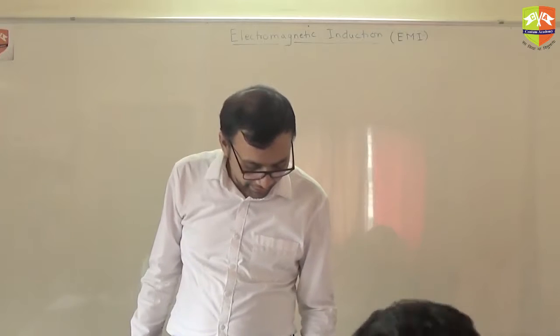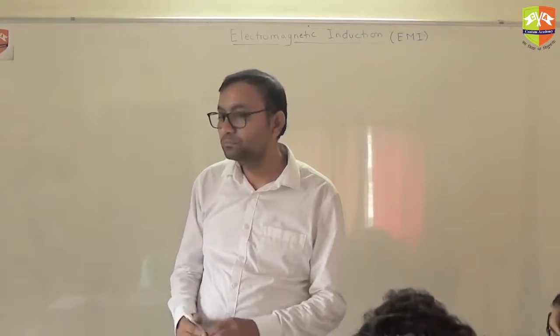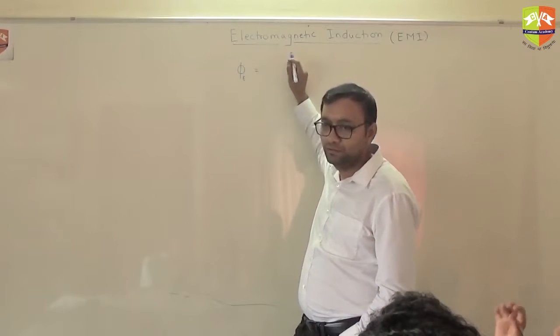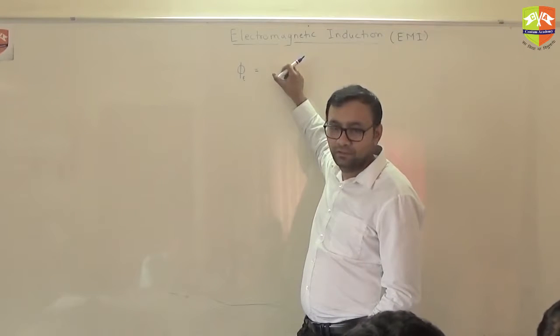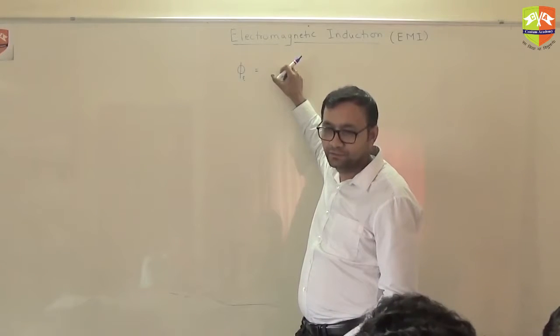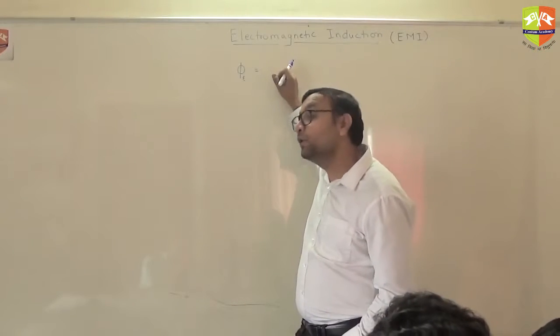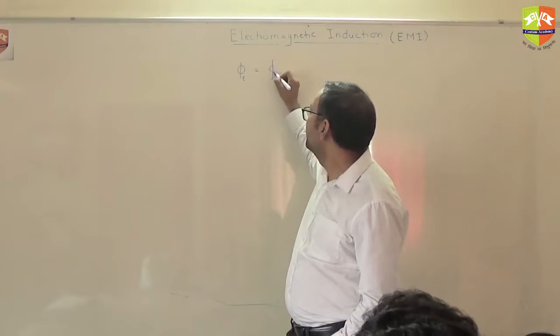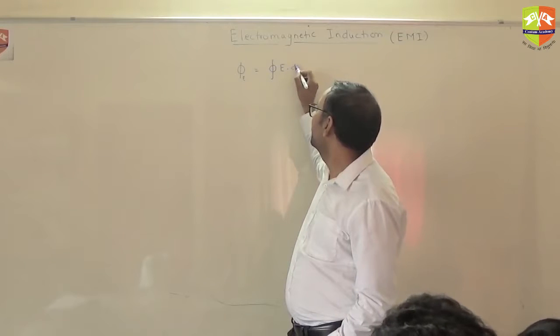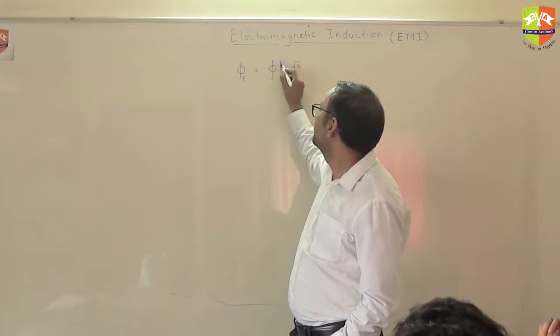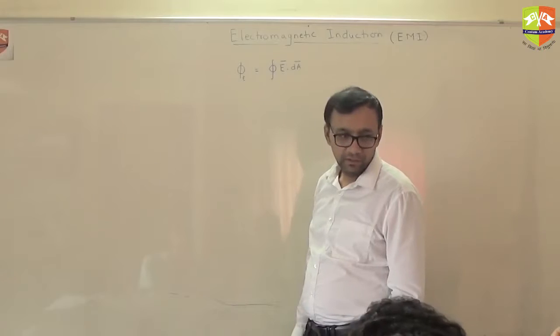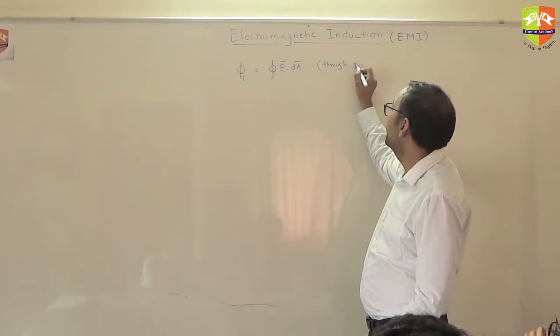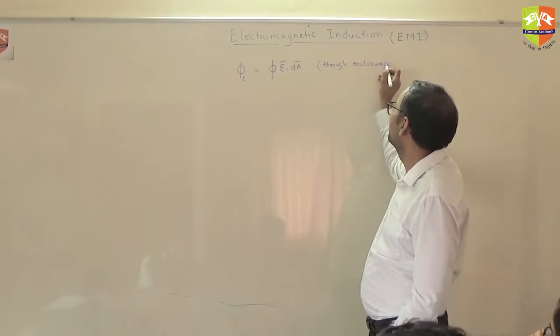How we calculated electric flux, you remember? Electric flux, how we calculated? φ_e. That is equal to q by ε_0. Enclosed. Or enclosure.